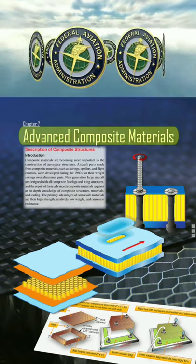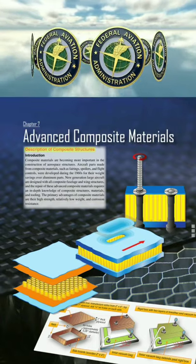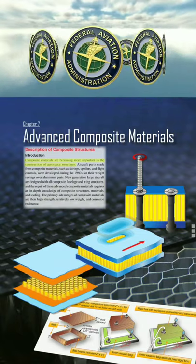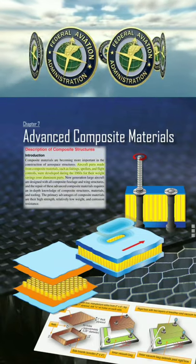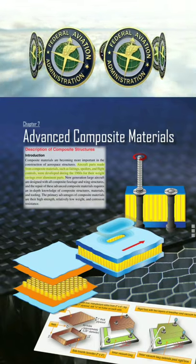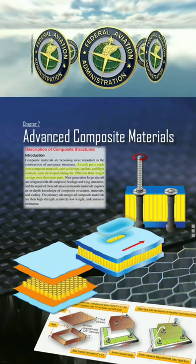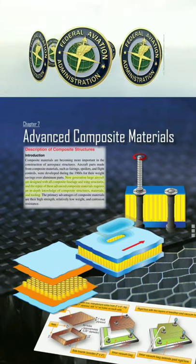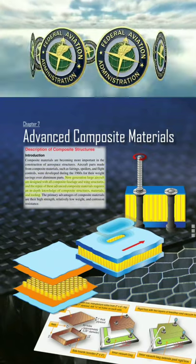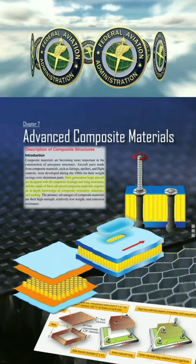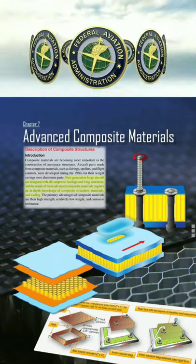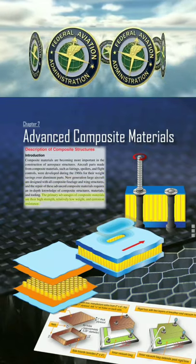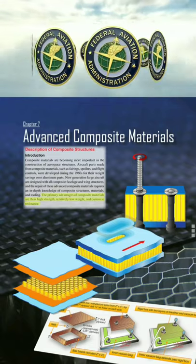Chapter 7: Advanced Composite Materials. Description of Composite Structures — Introduction. Composite materials are becoming more important in the construction of aerospace structures. Aircraft parts made from composite materials, such as fairings, spoilers, and flight controls, were developed during the 1960s for their weight savings over aluminum parts. New generation large aircraft are designed with all-composite fuselage and wing structures, and the repair of these advanced composite materials requires an in-depth knowledge of composite structures, materials, and tooling. The primary advantages of composite materials are their high strength, relatively low weight, and corrosion resistance.